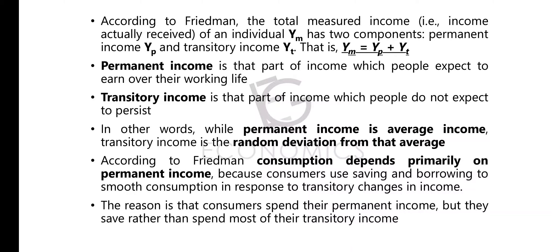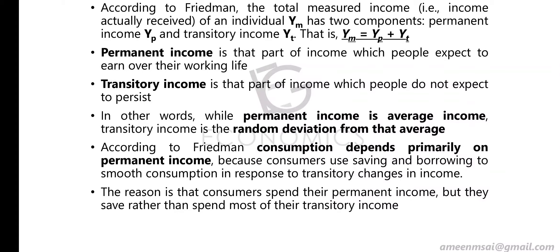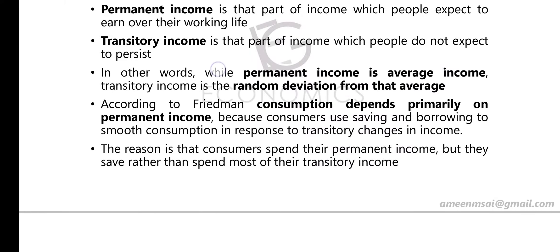Transitory changes can be negative or positive — sometimes you might get less income, sometimes more. When there is a transitory change, you will go to the average by saving or by borrowing. The reason consumption depends primarily on permanent income is that consumers spend their permanent income, but rather save than spend most of their transitory income. When you have a positive transitory income, you will save that part rather than spend it.